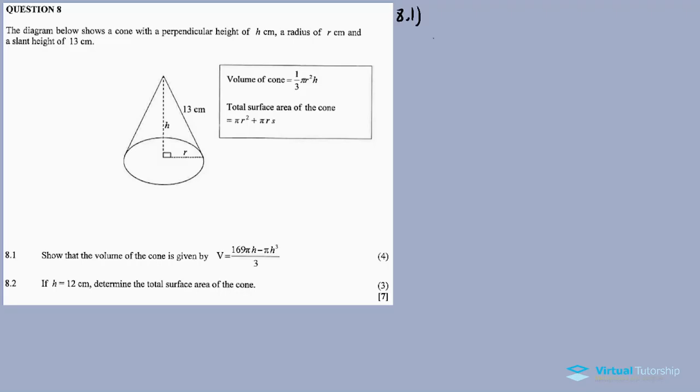So for 8.1, we need to show that the volume is equal to this. So we start with the volume formula. V is equal to 1 over 3 pi R squared times H. This R we need to express in terms of H. Since on this equation V equals, we don't have R on this equation.